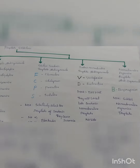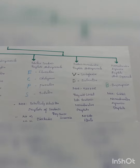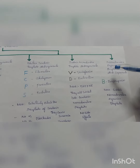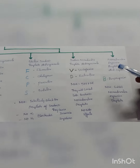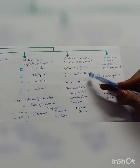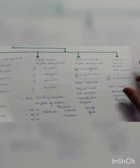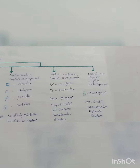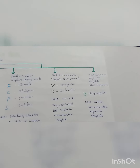Moving on to the serotonin-noradrenaline reuptake antidepressants — we can remember with the mnemonic VD: V stands for venlafaxine and D stands for duloxetine. The mechanism of action is they inhibit both serotonin and noradrenaline reuptake with no major side effects.